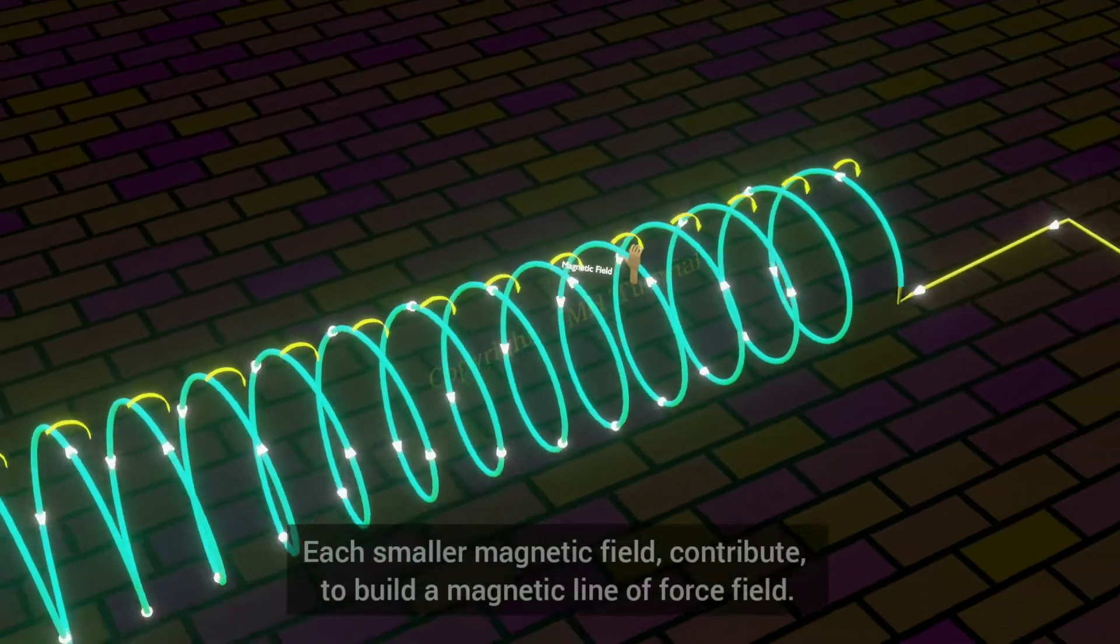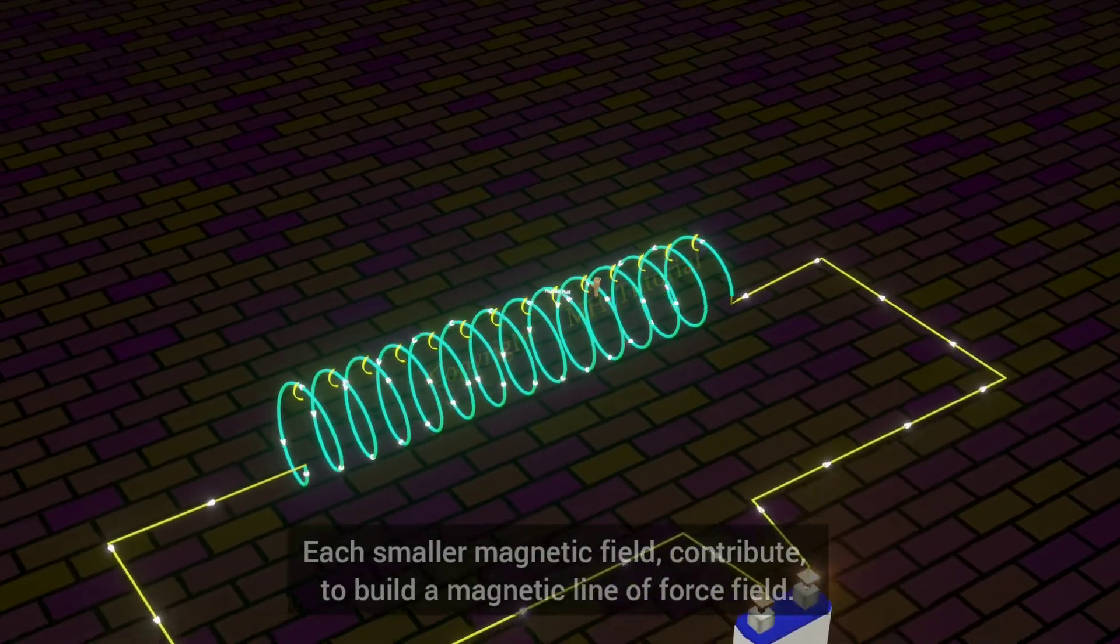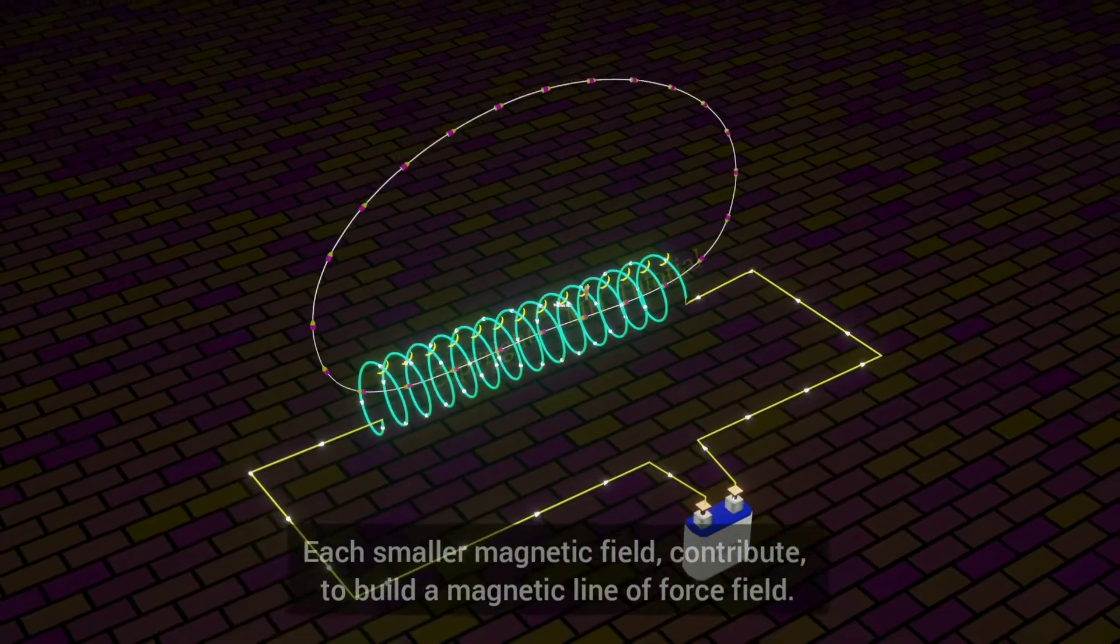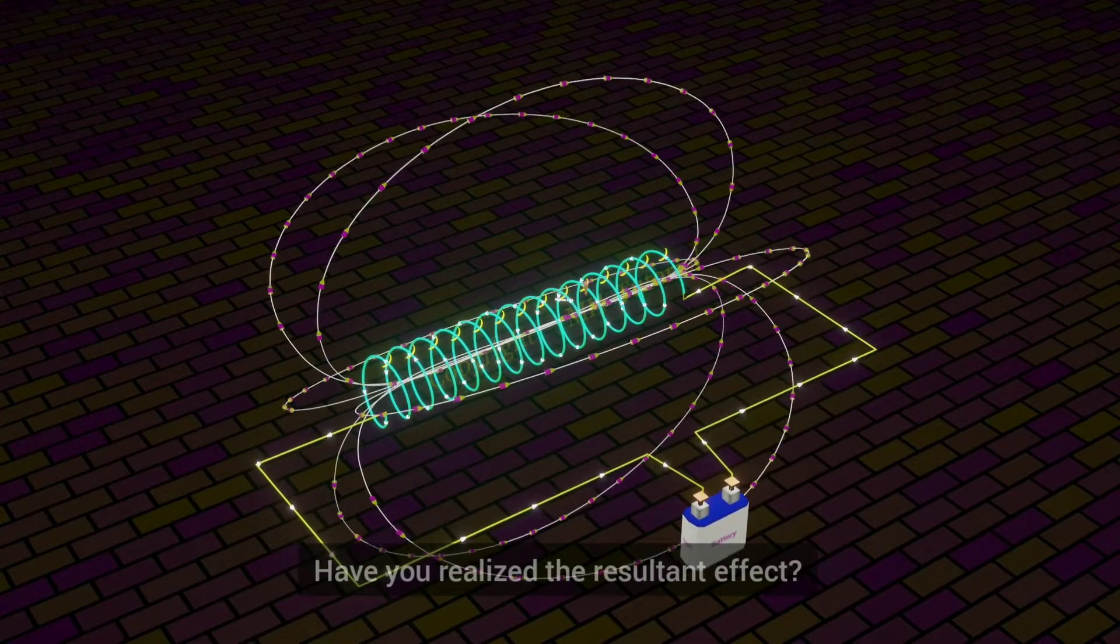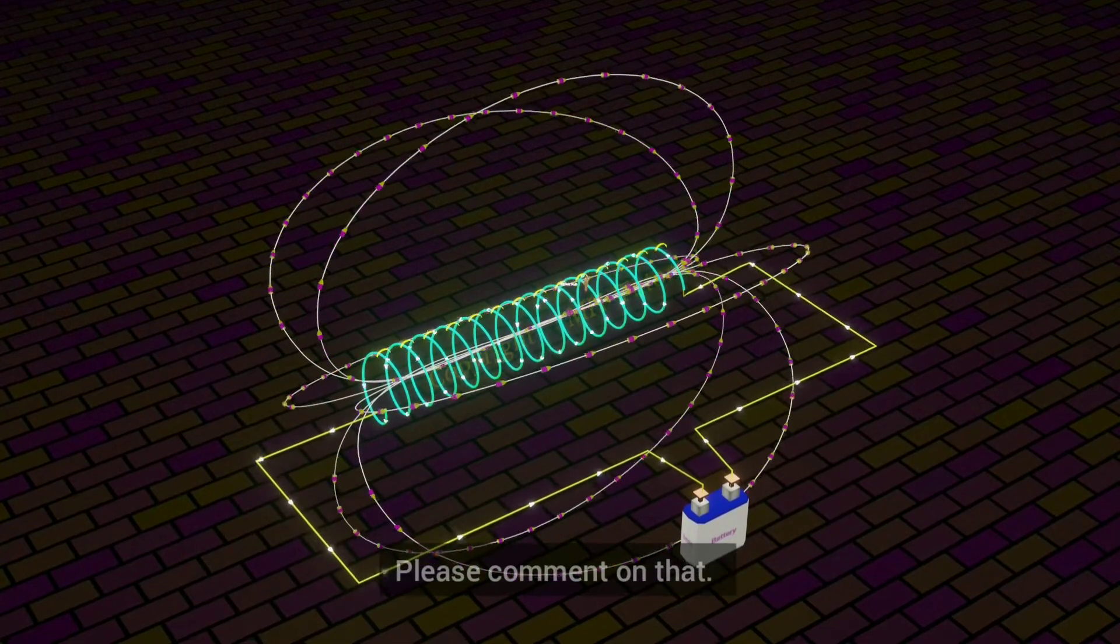Each smaller magnetic field contributes to build a magnetic line of force field. Have you realized the resultant effect? Please comment on that.